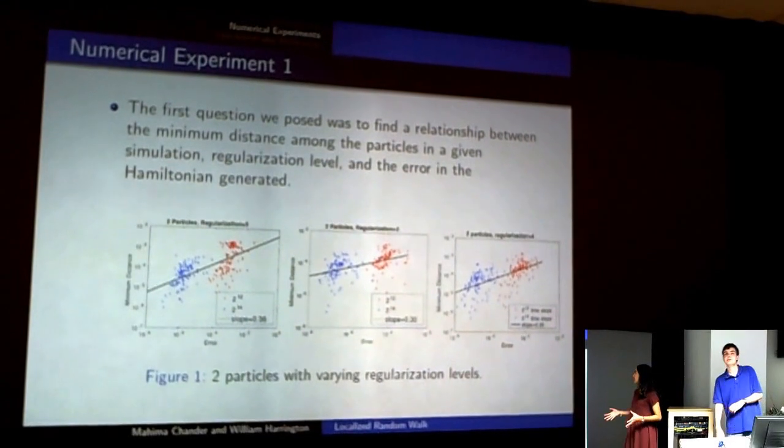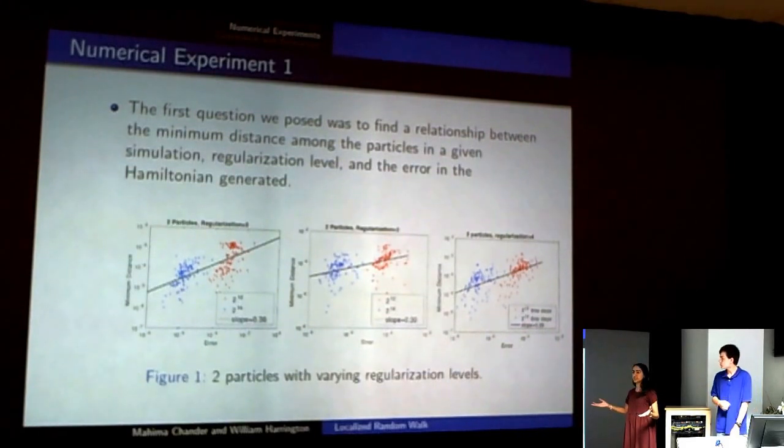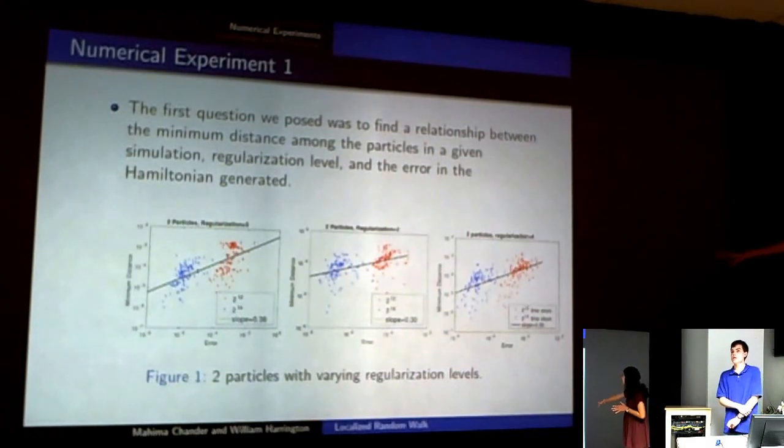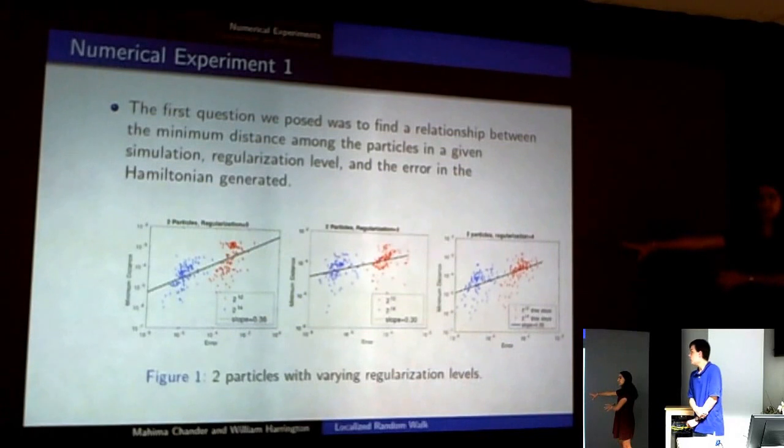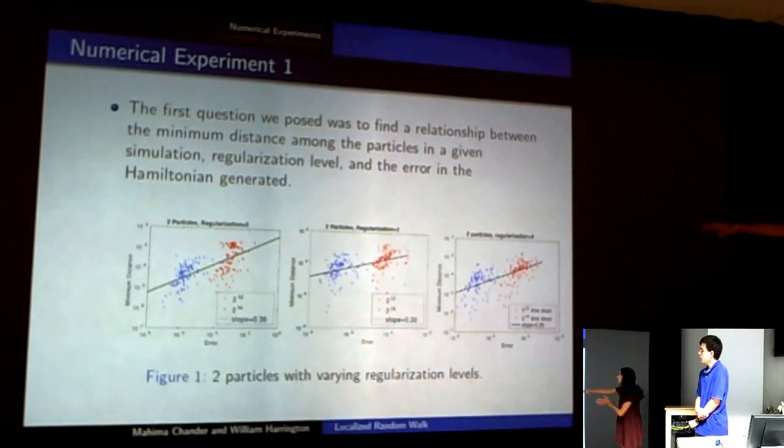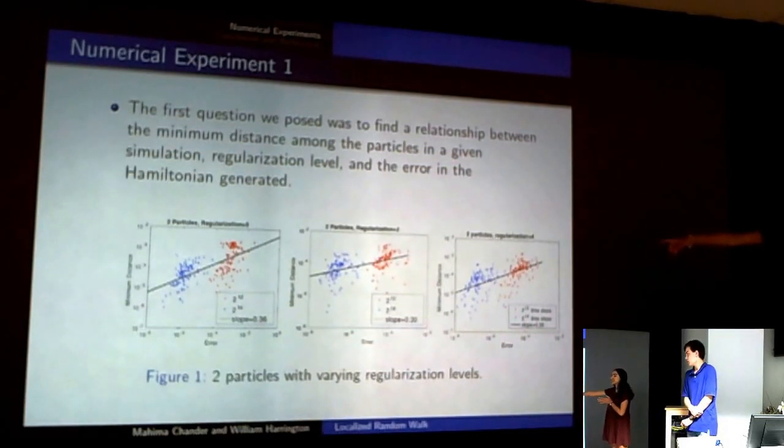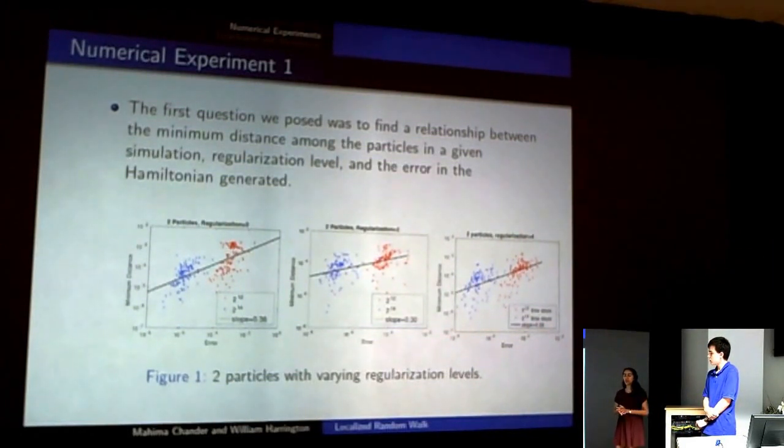The first thing we did was try to find a relationship between the minimum distance among particles in a given simulation, the regularization level, and the error rate in the Hamiltonian generated. We did three separate runs, and within each run, each of these points represents a trial done with these parameters. What we basically saw is that in the plot with two particles and regularization zero, the correlation between minimum distance and error rate was about 0.4, whereas when we increased the regularization to about 4, we saw a much stronger correlation at about 0.6.